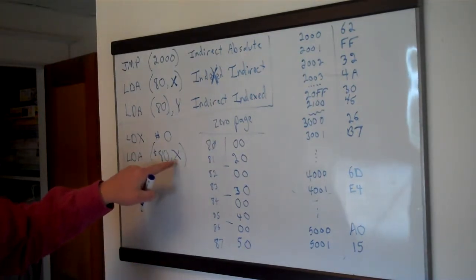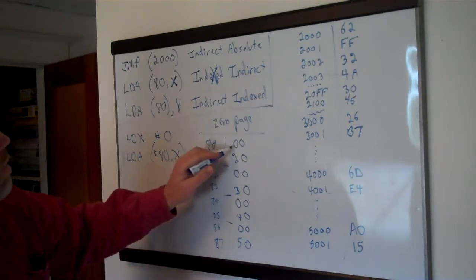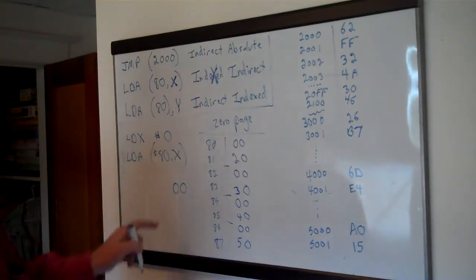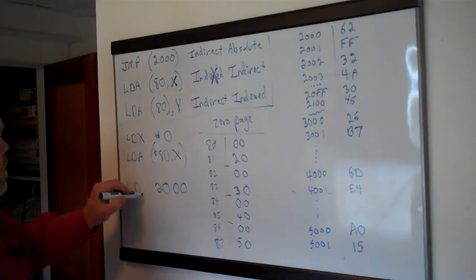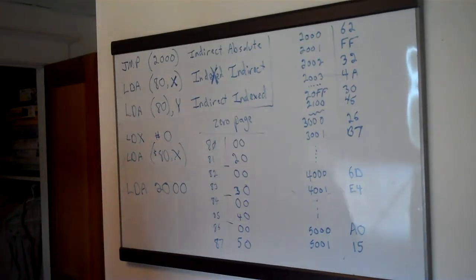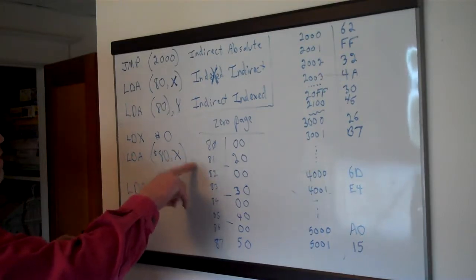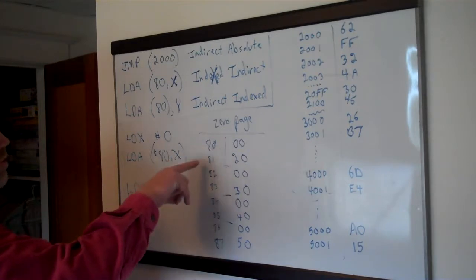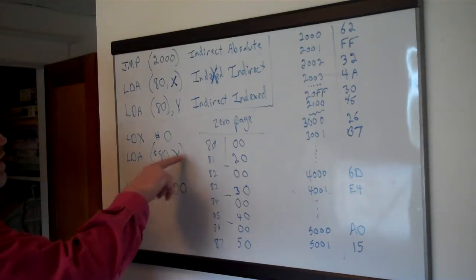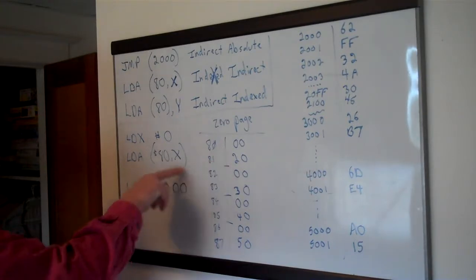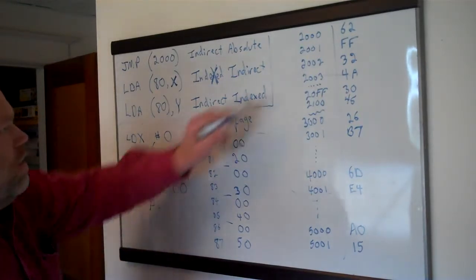Since X is zero, that's just 80. So it goes to 80 and gets a low byte. Then it goes to the next location, 81, and gets a high byte, which in this case is 20. Then it does the load A from that location — 2000. As far as your program is concerned, it doesn't load anything from address 80 or from zero page at all; it's just getting an address from zero page. The 80,X gives the low byte and 80,X+1 gives the high byte, making the address 2000.